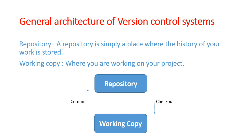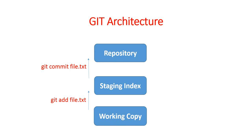अभी तक जो हमने समझा वो general architecture था, बट अगर हम git architecture देखें, तो इसमें एक extra stage add हो जाता है which is staging index। जब हमने git में हमारे file को commit किया था, तो हमने directly उसे commit नहीं किया था - first हमने उसे add किया। जब add किया, तो वो staging index में गई, और उसके बाद हमने git commit किया, तो वो repository में चली गई।